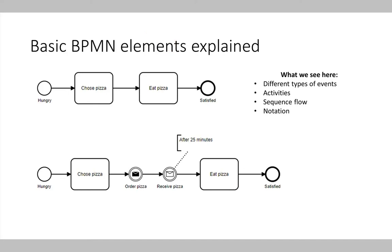The basic BPMN elements we see on the slide are events, sequence flows, and activities. An activity is represented by a rectangle with rounded corners — for example, 'choose a pizza' or 'eat a pizza'. Activities are connected in the process using sequence flows, which are simply small arrows connecting activities. Each activity needs to be connected to an ingoing and outgoing sequence flow.